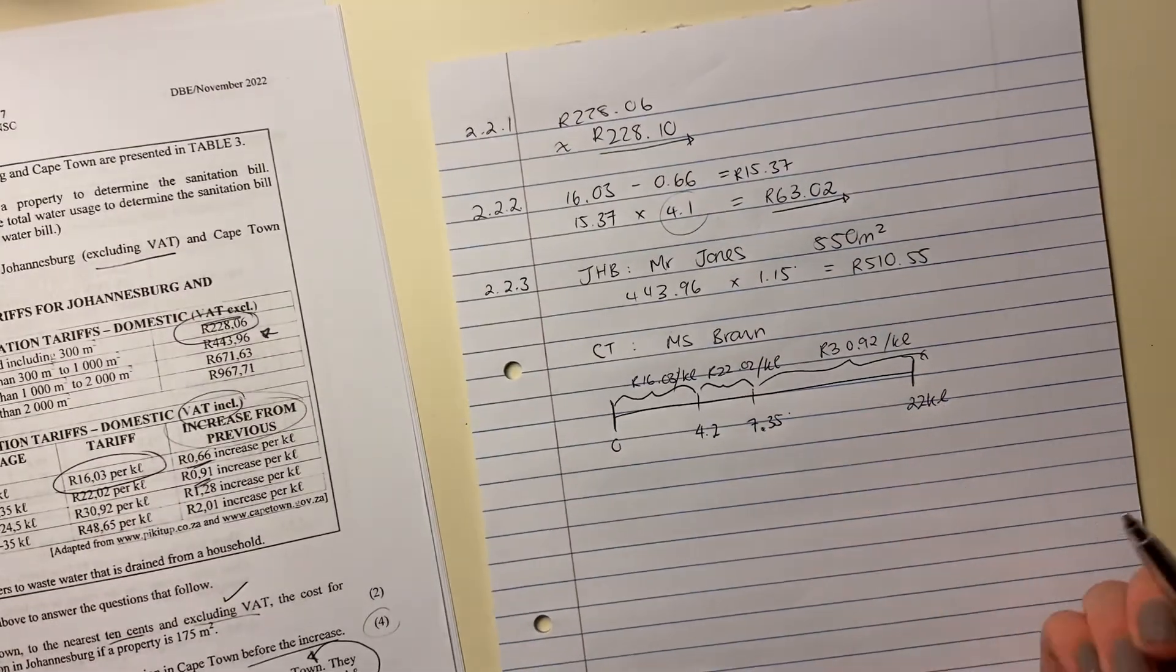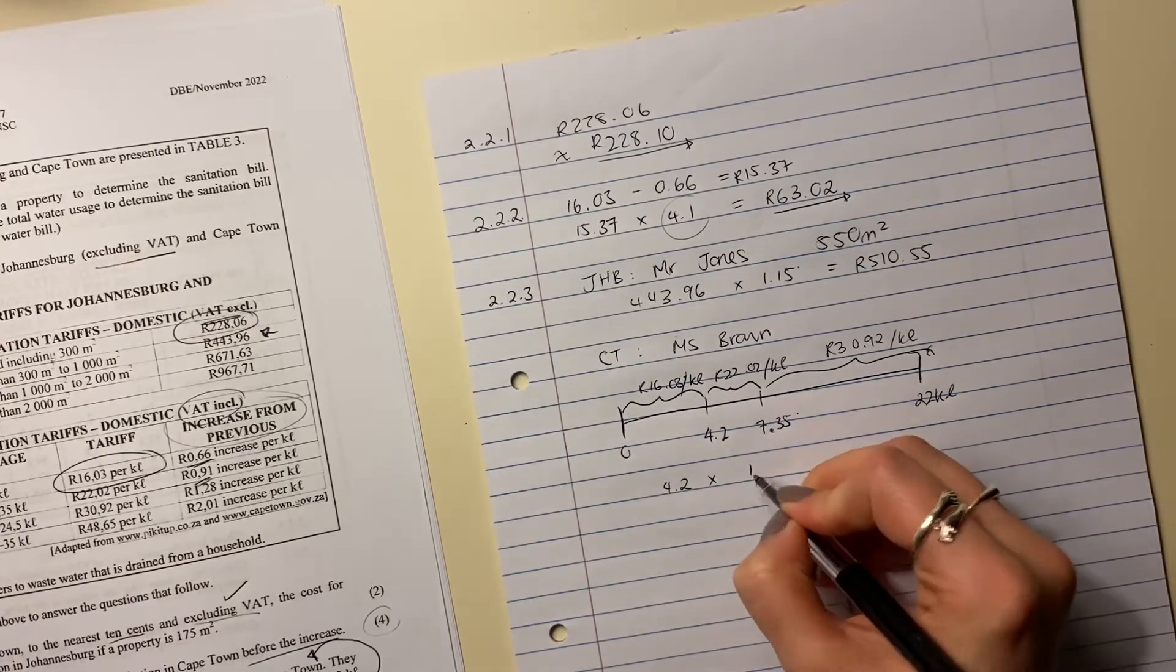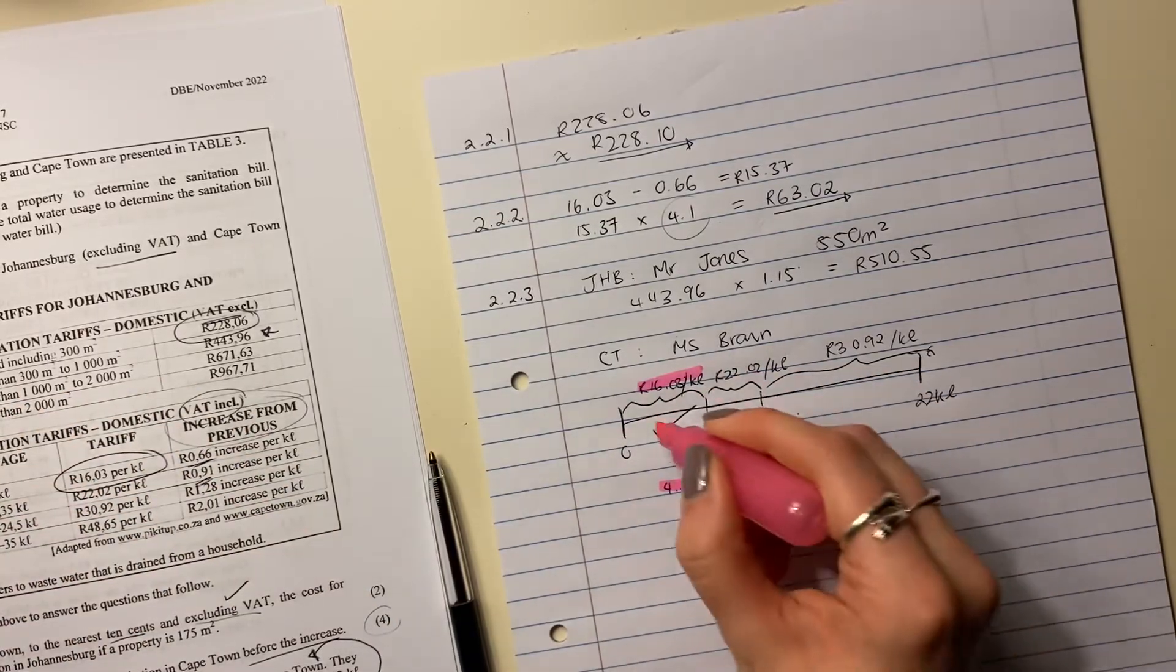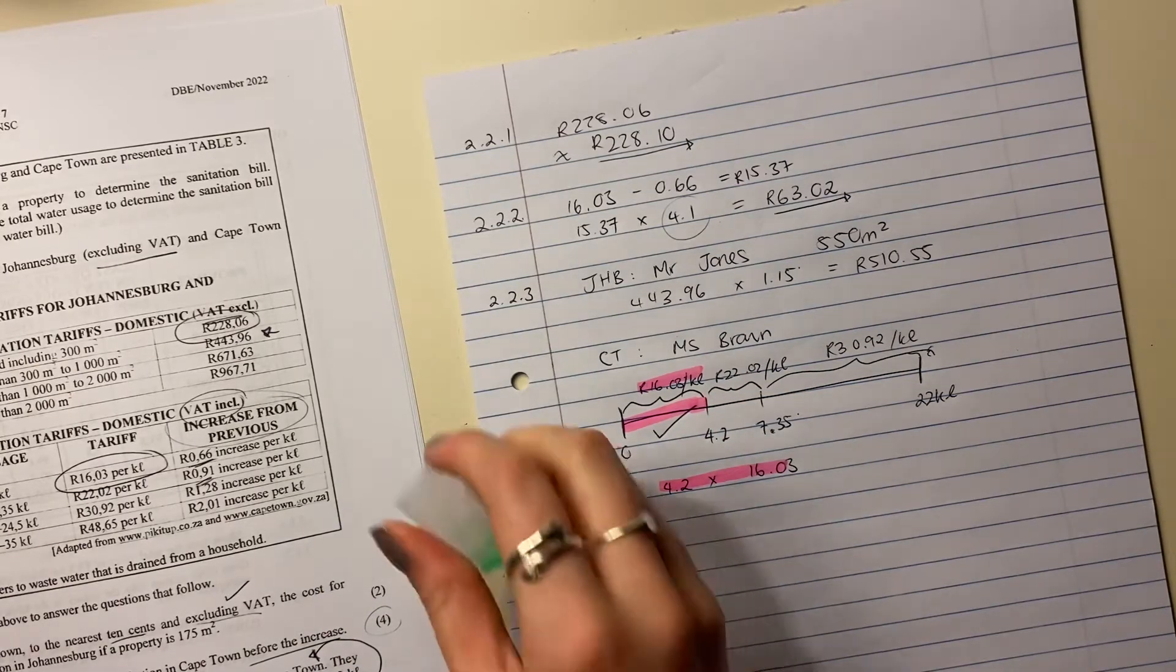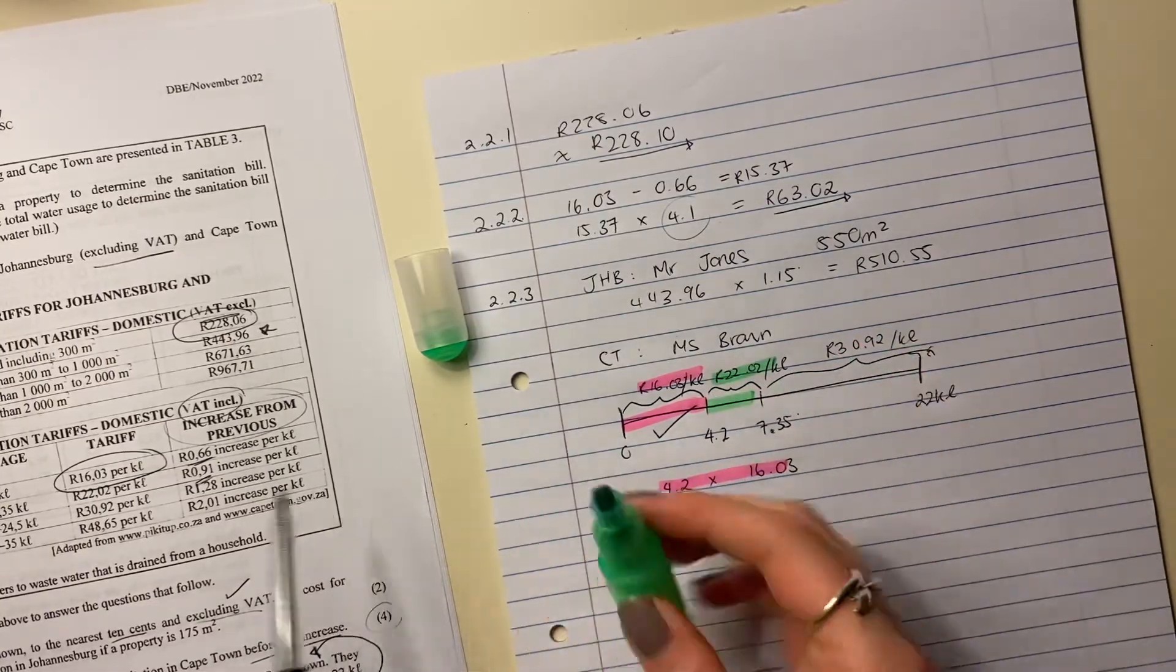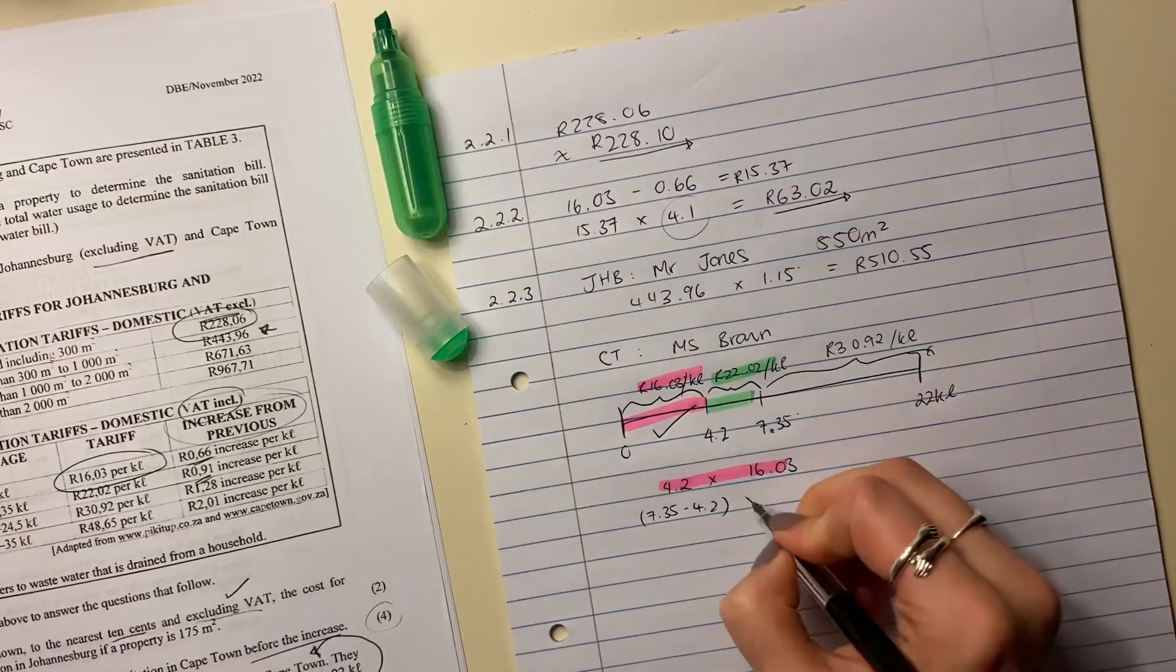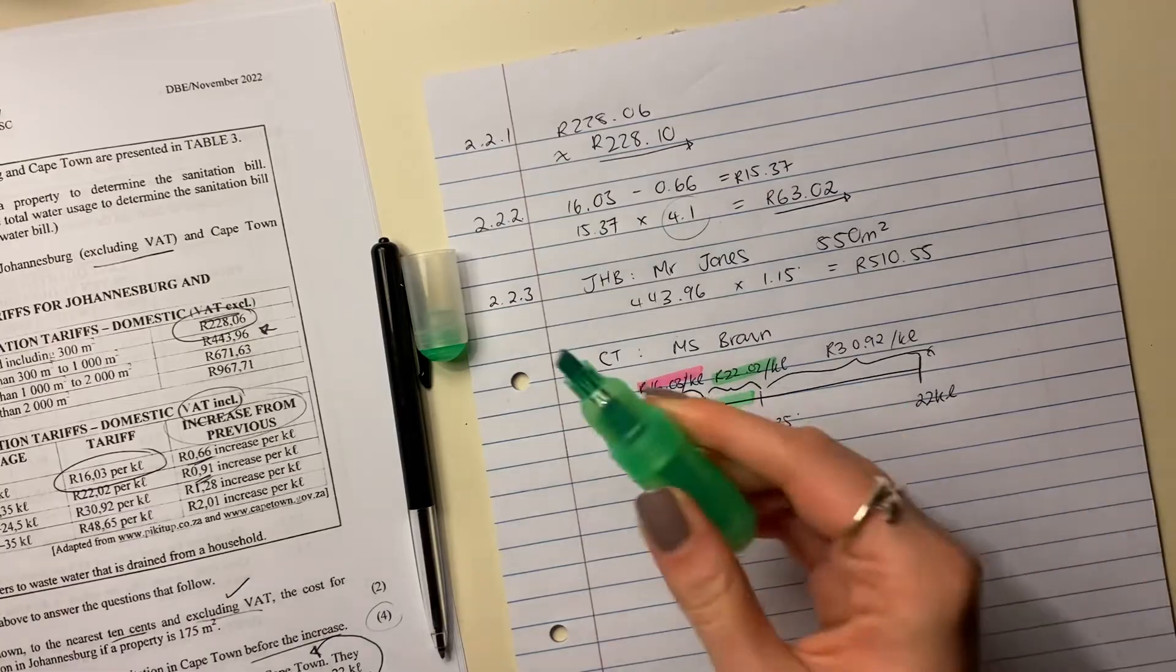So let me show you how I expect you to write it out. I want you to say 4.2, that's the first kiloliters that she had, times 16.03. So that accounts for there. Now the next little bit is going to be this bit here. So that bit there, we're going to say it's 7.35, but I have to minus the 4.2 because I'm really paying for the 4.2 and I'm going to times it by 22.02. And that's that amount there.